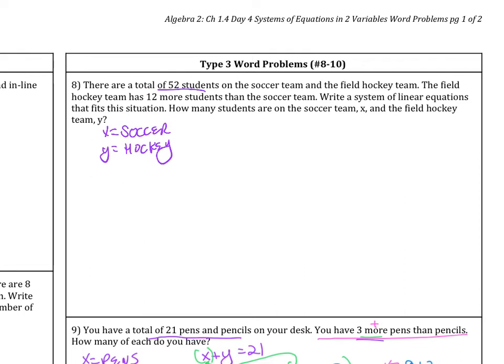So there are a total of 52 students on the soccer and field hockey team. So we can say x plus y equals 52. Then the next thing we need to use is the 12 more students. So x equals y. The hockey team has 12 more students than the soccer team. So the hockey team is currently larger. So in order to make it equal, I have to add 12 to the soccer team. So x plus 12 equals y. So hopefully that helps you in at least setting up this problem.